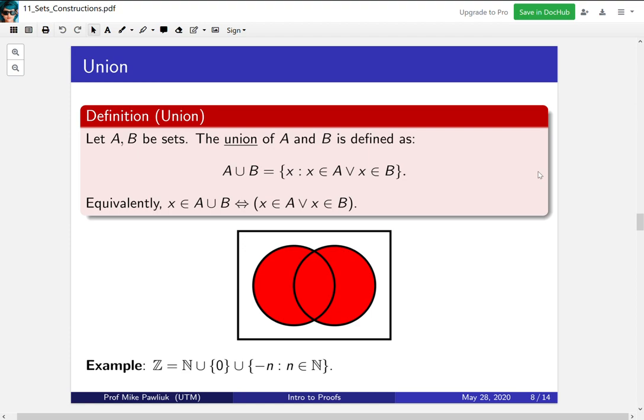As an example, the integers can be written as the naturals, union together just the element 0, union together all negative n where n is a natural. So we get all the positives, 0, and the negatives.